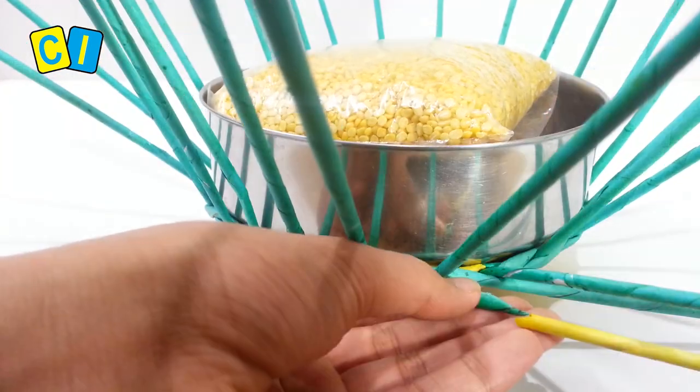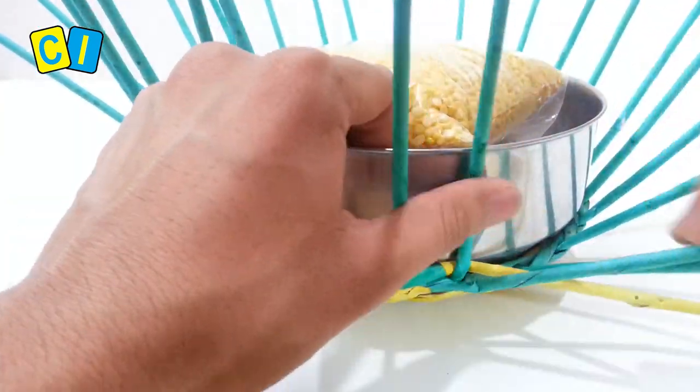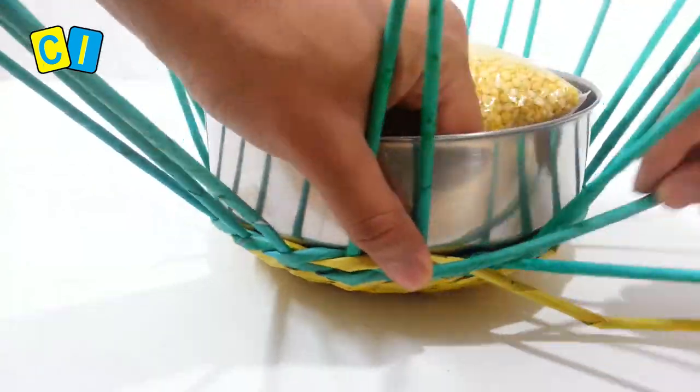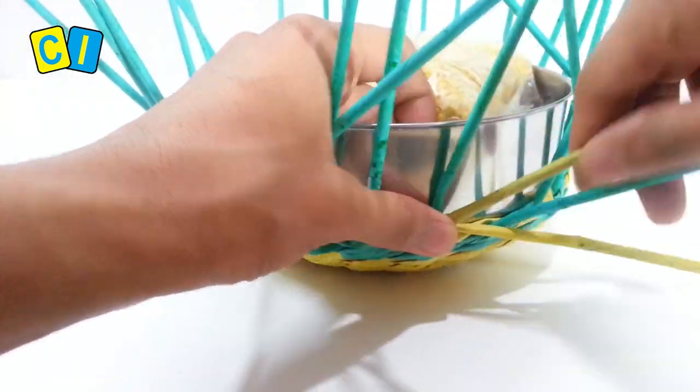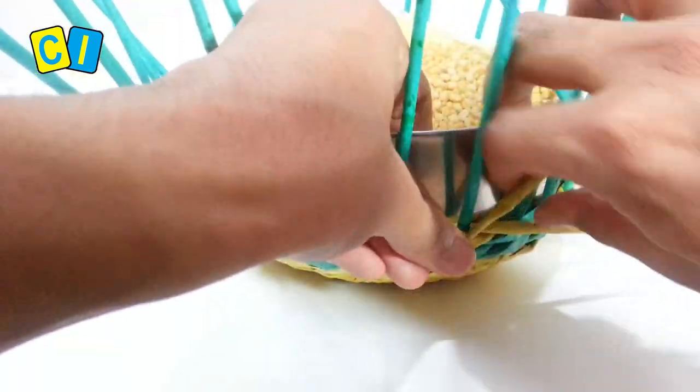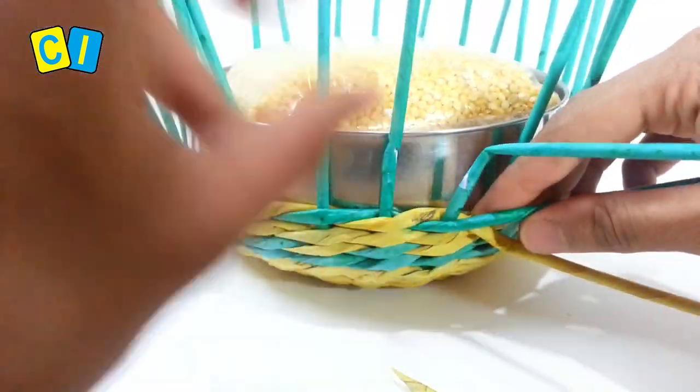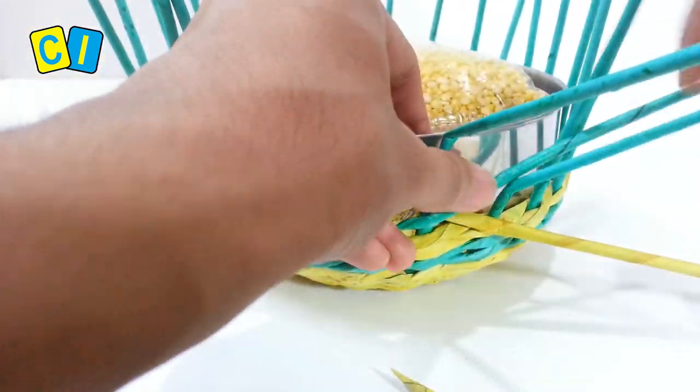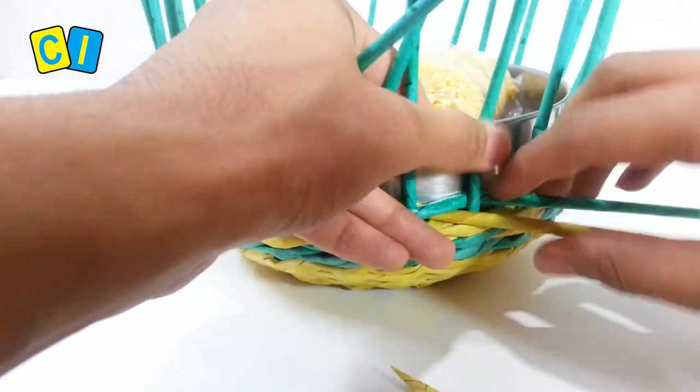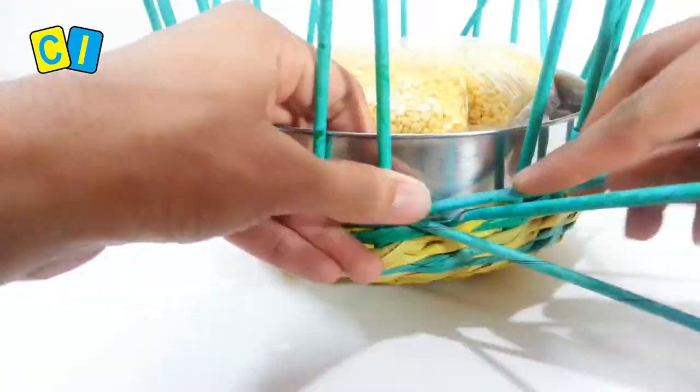After completing one row, change one tube to yellow. Complete another row and change the other tube to yellow. After one row, change one tube to green, complete one row, change the other tube to green and weave another row.